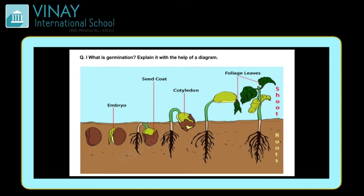Question I: what is germination? Explain it with the help of a diagram. Germination kya hai aur usko diagram ke saath explain karna hai. Maine aapko germination ka diagram diya hai. Baccho, germination ek seed mein se ek plant ka grow hona — yeh jo poora process hai usko hum germination kehte hain. Seeds se directly plant grow nahi hota; it's a process, step by step.